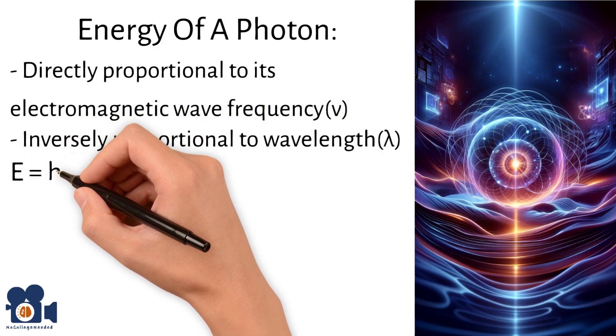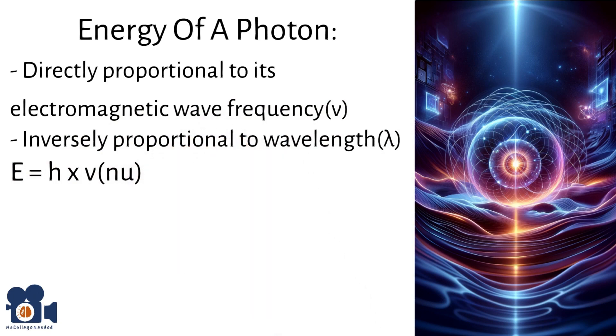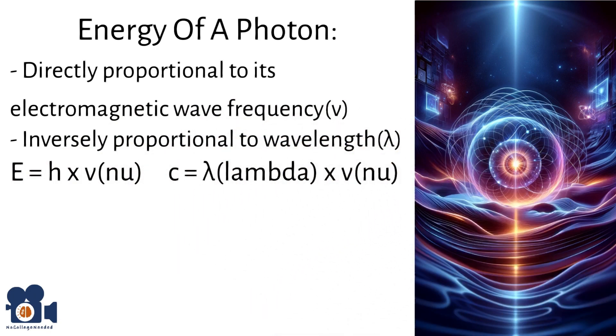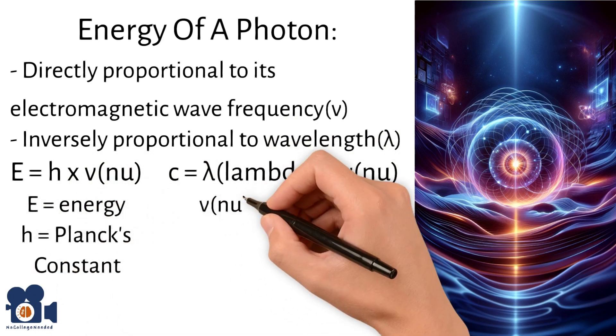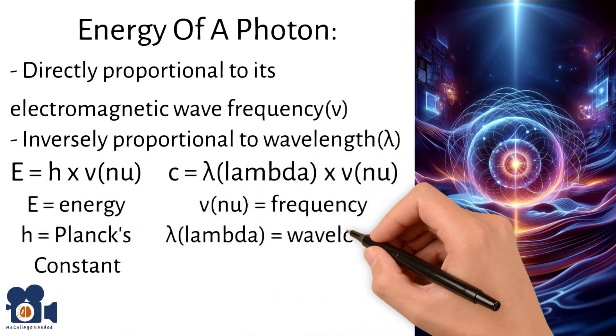The equations being E equals h times nu and lambda times nu equals c, where E is energy, h is Planck's constant, nu is frequency, lambda is wavelength, and c is the speed of light.